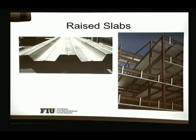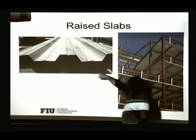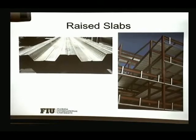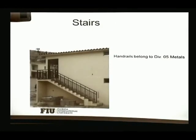On top of the beams, columns, and structural frame, you need floors. A typical method uses metal braced slabs — metal deck panels with shear connectors. You add reinforcement and pour concrete on top. You need to estimate the volume of concrete and add the reinforcements accordingly.